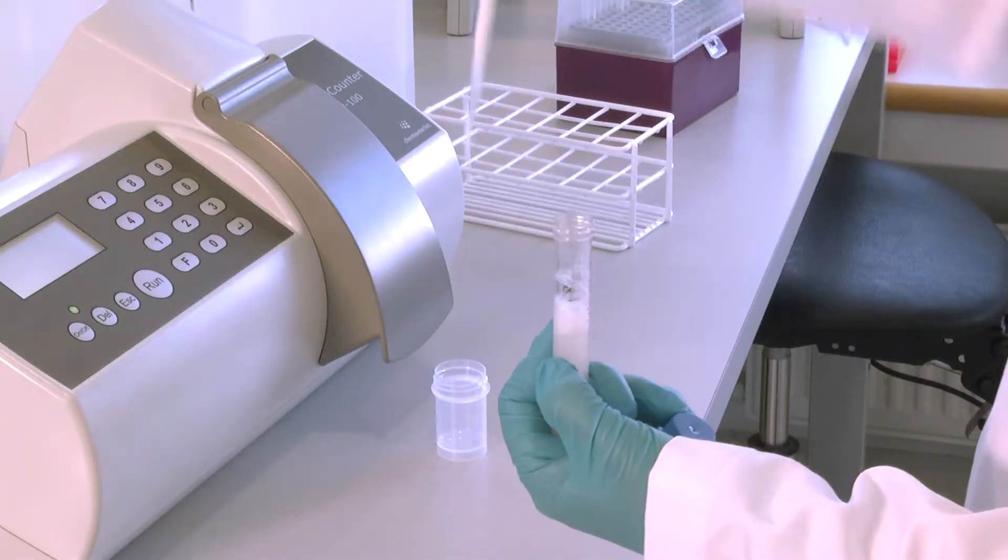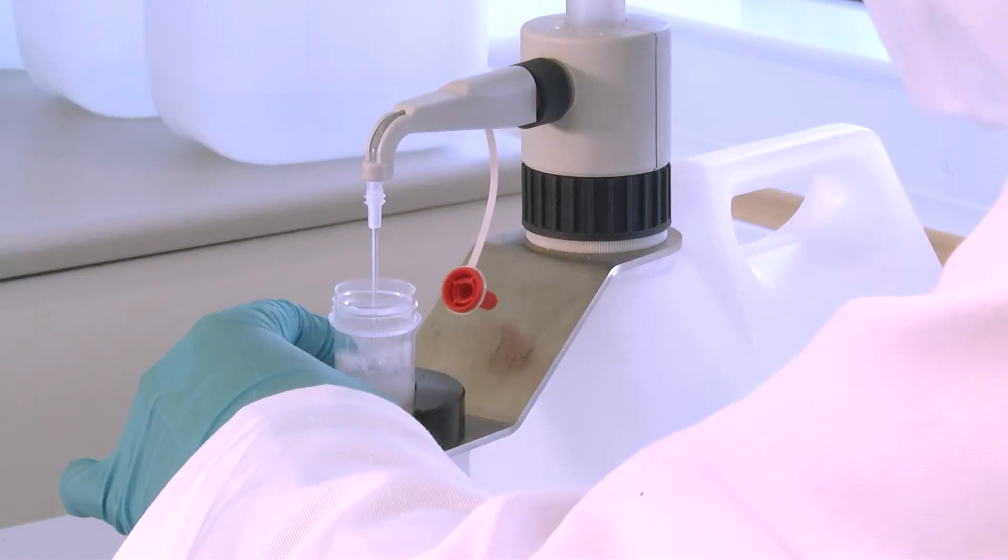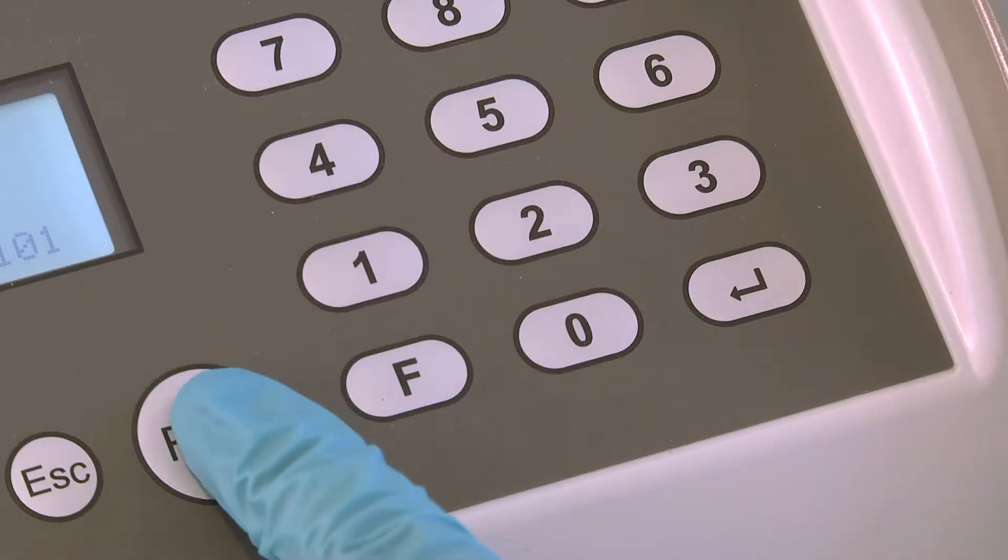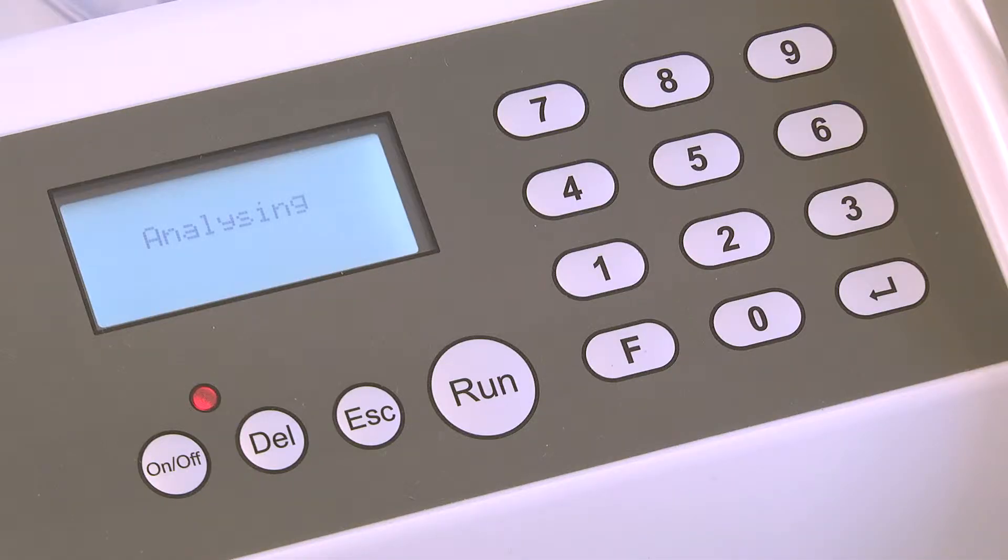Simply take a small sample of semen, dilute with the supplied reagent, load the cassette, insert and press run. In 30 seconds the instrument shows the total cell count in the display.